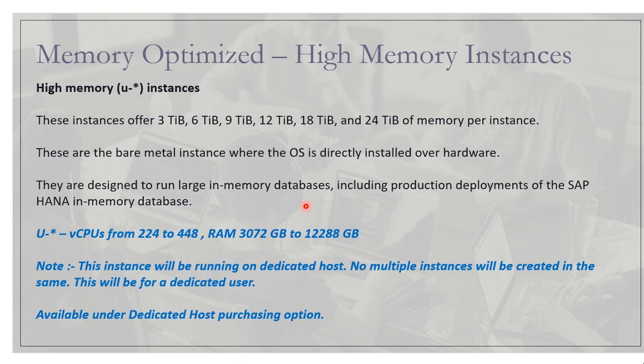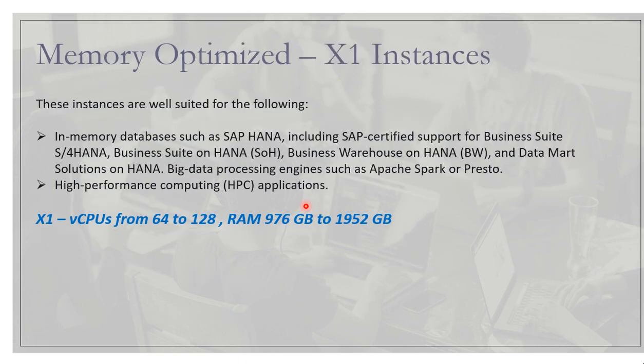The second category is high memory instances — the U-star series. These are essentially bare metal instances, meaning no virtual machines are created. They are dedicated host instances provided directly to a user, and since the OS is installed directly on physical hardware, you get direct access to physical resources. Note that Amazon requires at least a one-year plan to purchase these high memory instances.